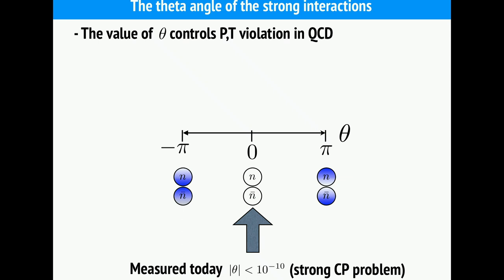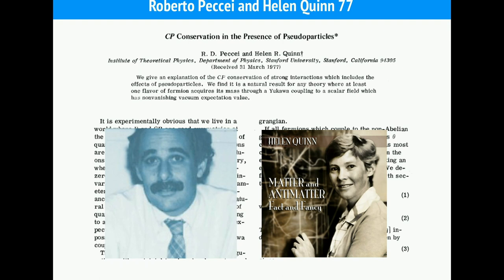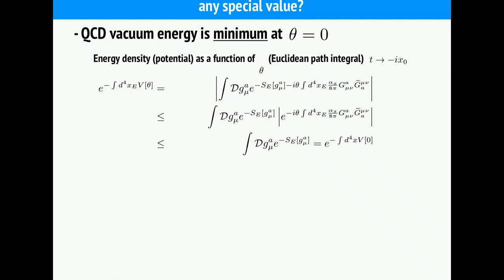This is a question similar in nature to why the Yukawa couplings of neutrinos with the Higgs are so small — it might simply be that they are very small, like 10 to the minus 13 or 14. However, when we study nature and find small numbers, we like to think that perhaps these small numbers are due to something — they can be related to something that explains why they are so small. This is what Roberto Peccei and Helen Quinn did already in the 1980s: they tried to find a dynamical explanation for why this CP-violating parameter theta is so small.